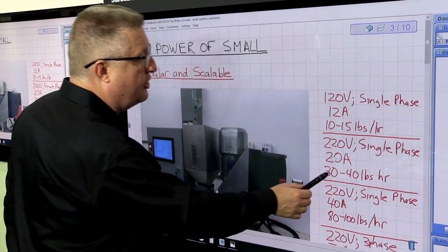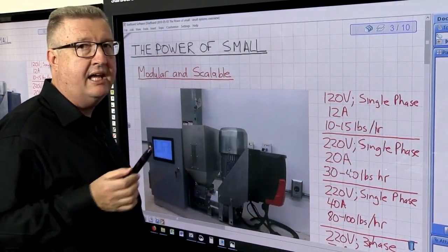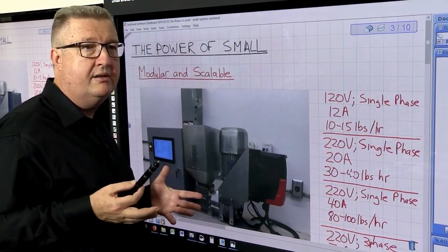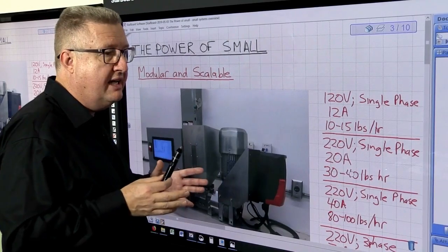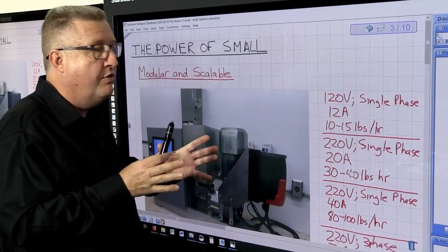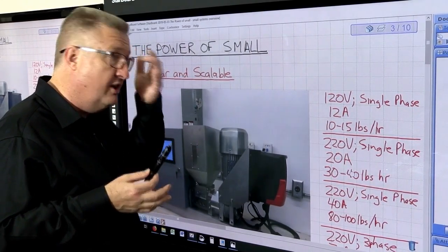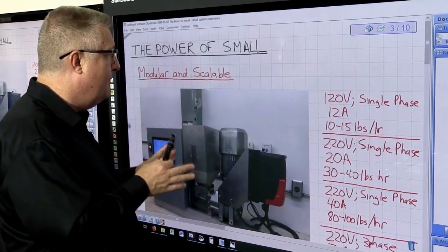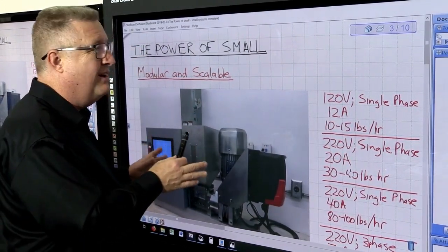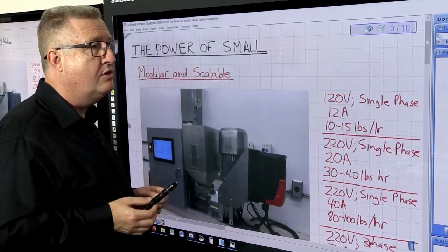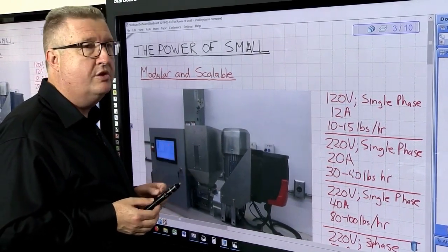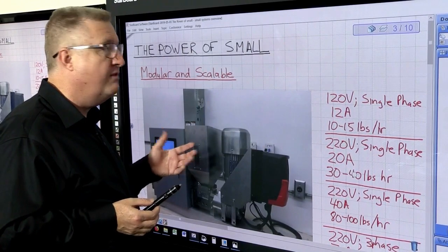And it can process 30 to 40 pounds of plastic every hour, which is quite a lot. So if you've got a new idea for a part that weighs 2, 3, 4 pounds, you can make quite a few parts every hour. Or if you've got a new extrusion, you're going to be able to make it in a very small setting. In fact, a two-car garage for a lot of entrepreneurs can be a virtual manufacturing paradise.